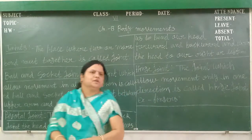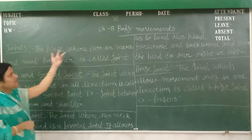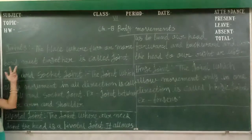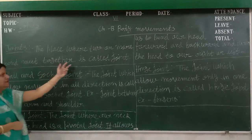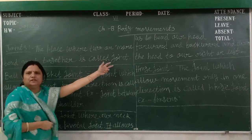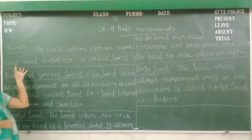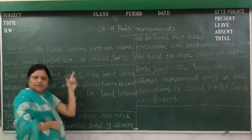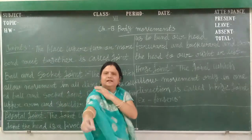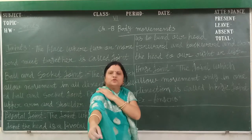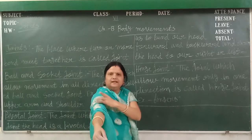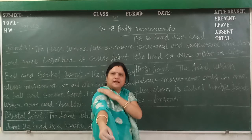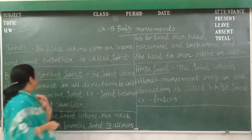What is a joint? The place where two or more bones meet together is called a joint — where bones meet together, they are known as a joint. Just like our arm and hand, in between them is a joint. Our hand and shoulder, arm and shoulder — they are joined by a joint.